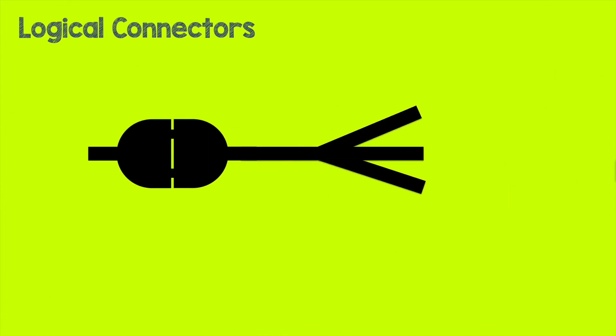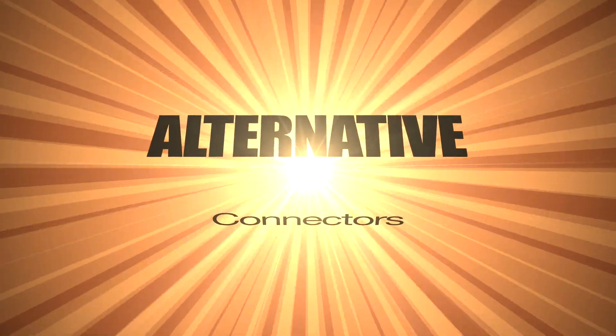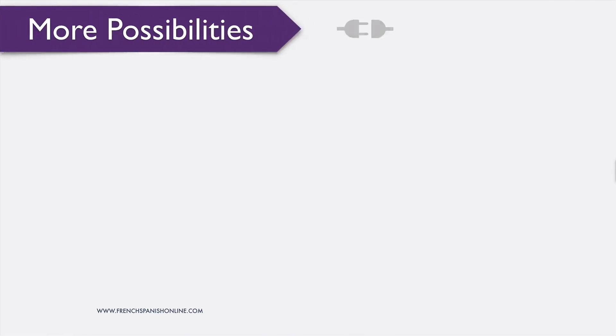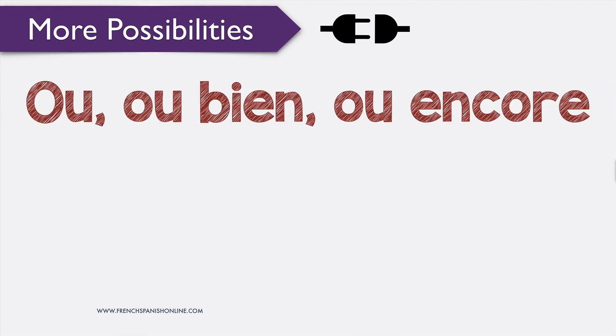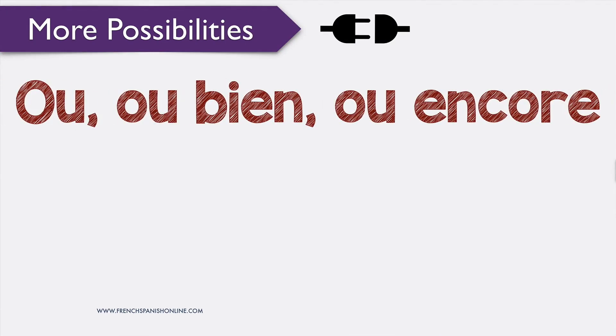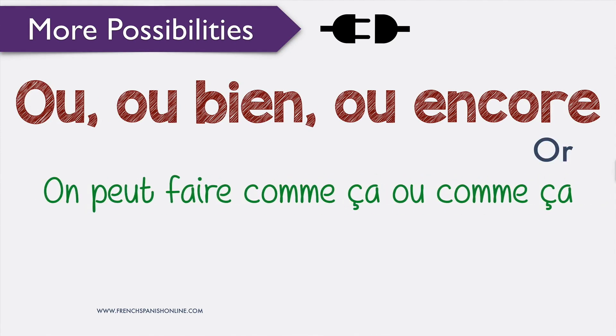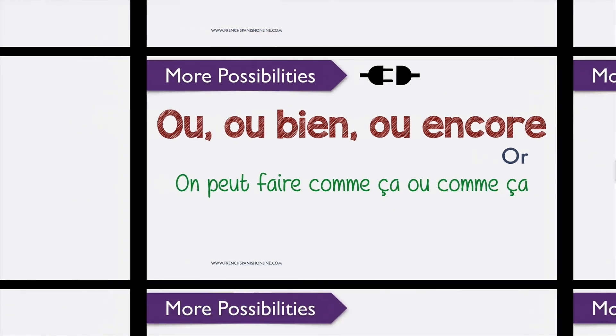Now you would like to offer a choice in your conversation — we have connectors for that too. You can use 'ou', 'ou bien', or 'ou encore', all meaning 'or': 'on peut faire comme ça ou comme ça', 'on peut faire comme ça ou bien comme ça', or 'ou encore comme ça'. Three possibilities to translate 'or'.